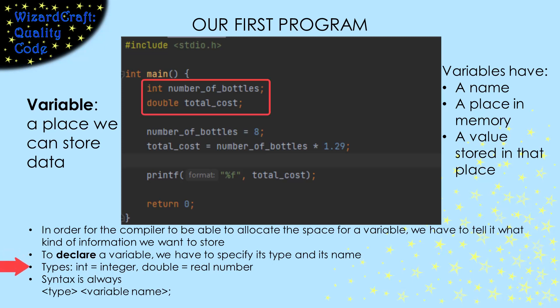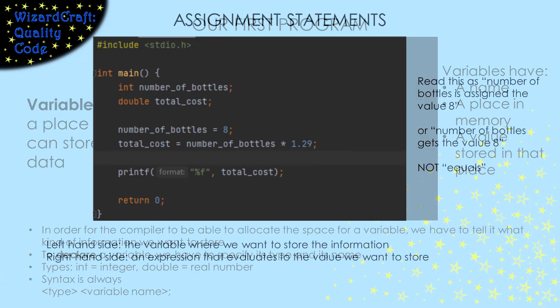In these declarations, int means integer and double means a real number. So number_of_bottles is a variable that will hold an integer, and total_cost is a variable that will hold a real number. The syntax of a declaration is always the type followed by a variable name.